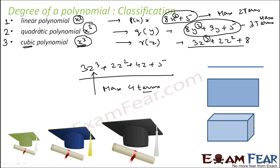So to summarize: linear polynomial maximum 2 terms, quadratic polynomial maximum 3 terms, cubic polynomial maximum 4 terms. Linear polynomial — think of x, maximum power is 1. Quadratic polynomial — think of x squared, maximum power is 2. Cubic polynomial — think of x cubed, maximum power is 3.